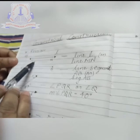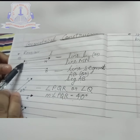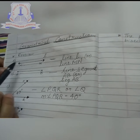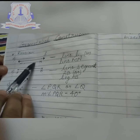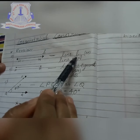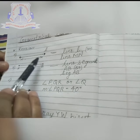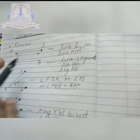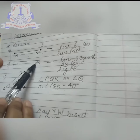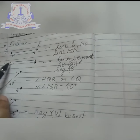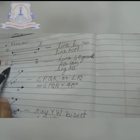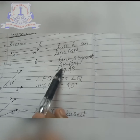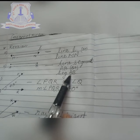The first figure here has arrows on both sides, which means it can be extended from both sides. This figure can be named as line L or line MN. The second figure shows that both endpoints have a dot, meaning it cannot be extended from both sides. You can name it as line segment AB or simply segment AB.